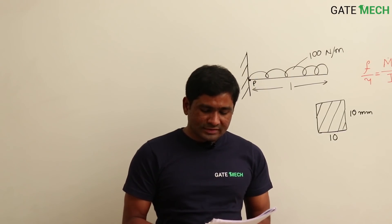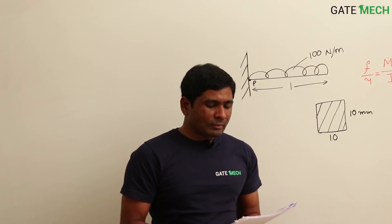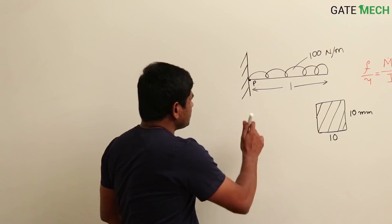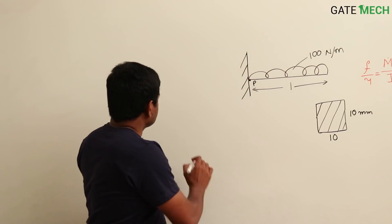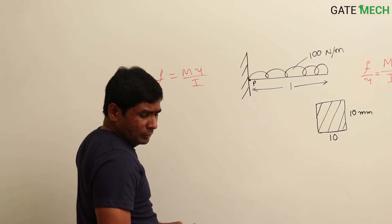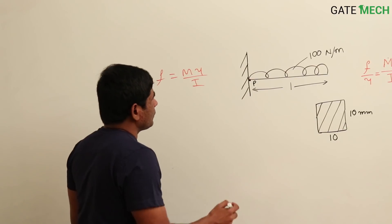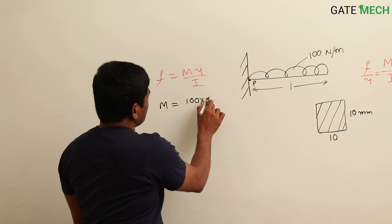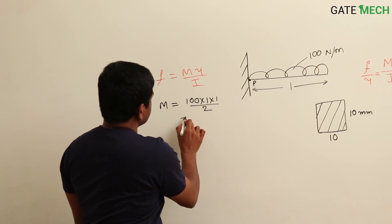The next question was asked in 2016 in the production paper. A 1-meter length, 10 mm × 10 mm cross-section cantilever beam is subjected to a uniformly distributed load of magnitude 100 Newton per meter. We need to find the normal stress due to bending at point P. Using f = My/I, the bending moment M = 100 × 1 × (1/2) = 50 Newton-meter.